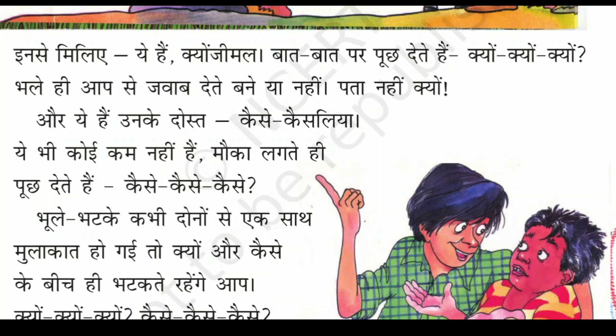Meet him — this is Kyo Jamal. On everything and at all times, he keeps on asking why, why, why. Whether you could answer or not, he keeps asking. And this is his friend, Kaise Kya Liya — the 'how' person. He is also not better.